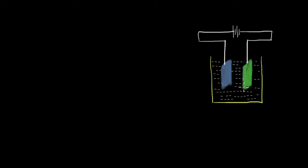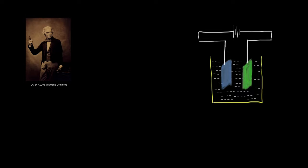But the question is, when this sort of setup is used, how much of copper will be deposited on the electrode? In the 1830s, Michael Faraday had a similar question, and he figured out a way to calculate how much deposition takes place on the electrode, which is called Faraday's first law of electrolysis.